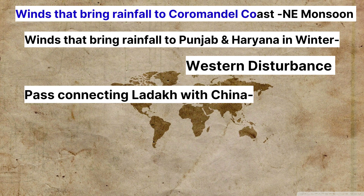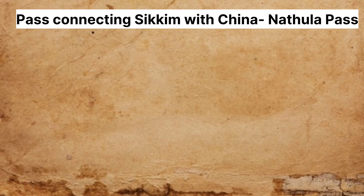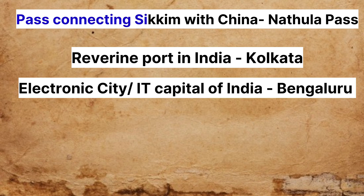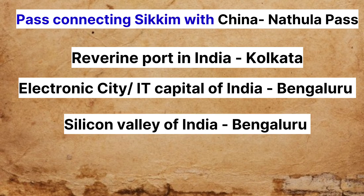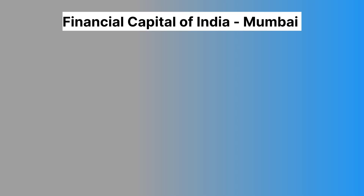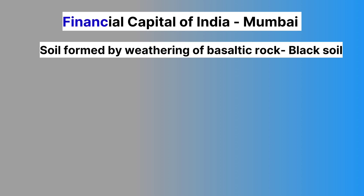The pass connecting Ladakh with China is the Karakoram Pass. The pass connecting Sikkim with China is the Nathu La Pass. The riverine port in India is Kolkata. The electronic city or IT capital of India is Bengaluru. Silicon Valley of India is Bengaluru. ISRO headquarters is in Bengaluru. The financial capital of India is Mumbai.